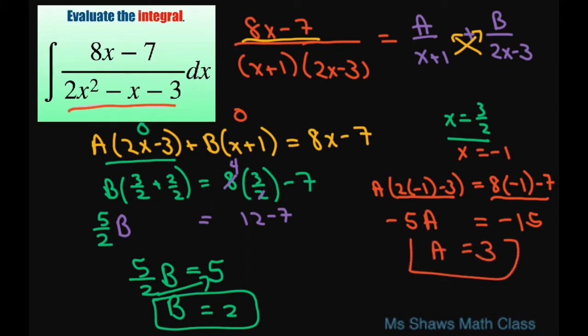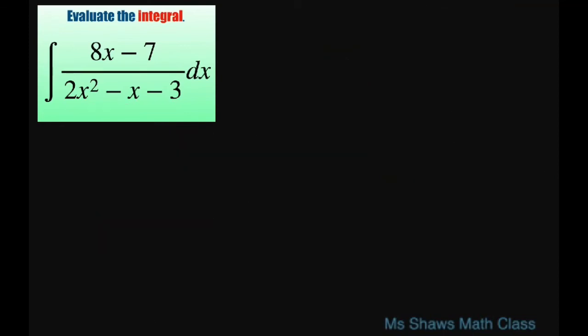So since we have our A and B, we're going to plug it back in to our original equation and then integrate. So we're going to get the integral of 3 divided by x plus 1 plus 2 divided by 2x minus 3, dx.